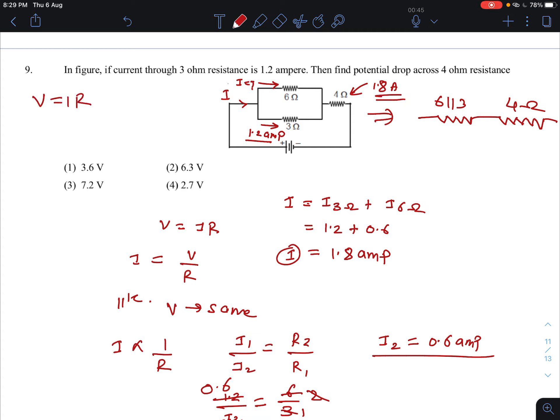We have to find out, current is 1.8 into resistance is 4. So how much will this be? 7.2 volt. That is option C is correct.